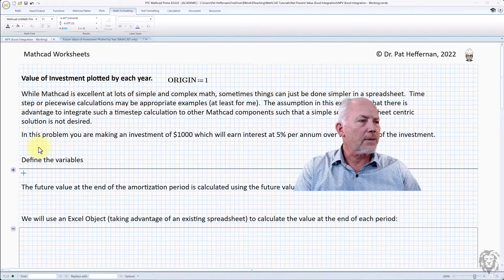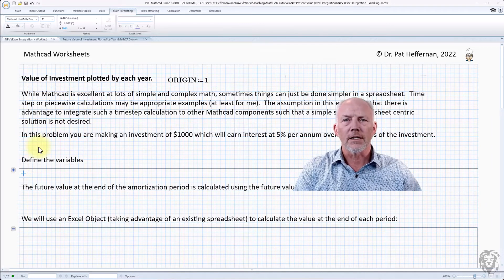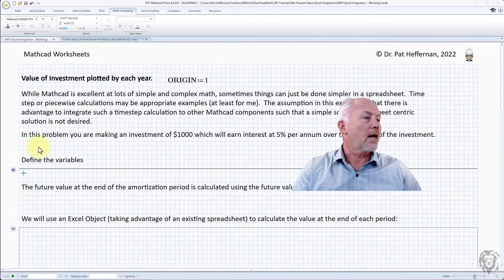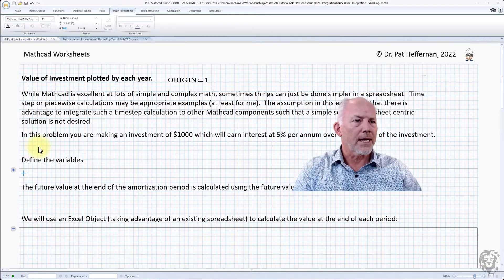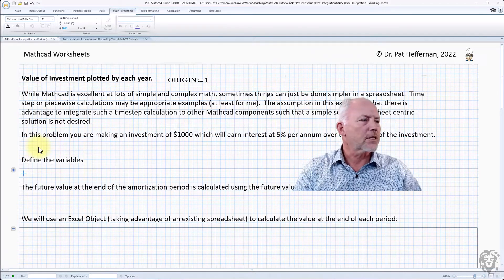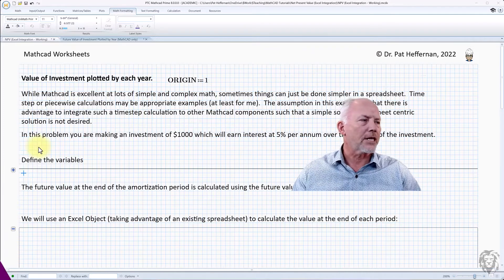So we're setting up a simple problem here. Really, it's just an investment problem. We're looking at future values of a compounding interest investment. The problem is laid out there. But the problem's really not the issue. What we want to do is to do the calculations with it. So I'm going to bash ahead with that.